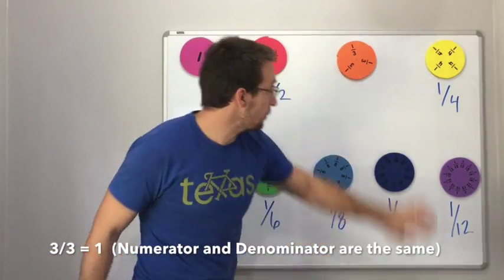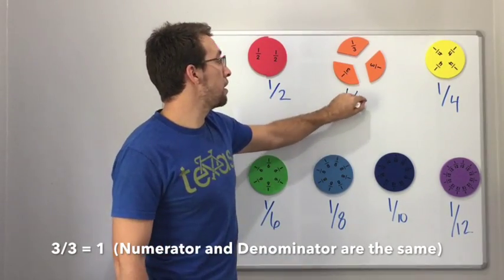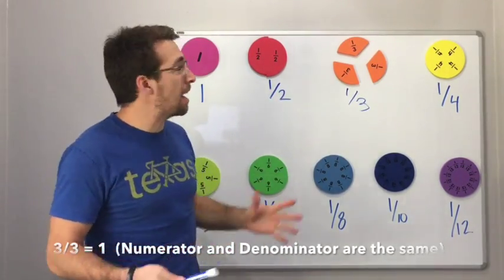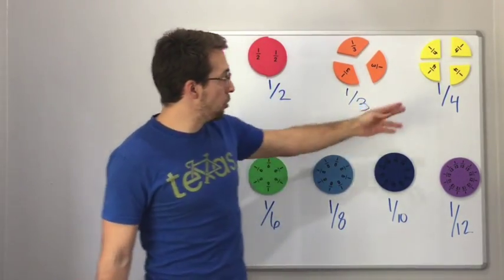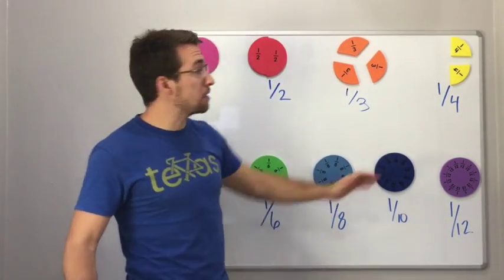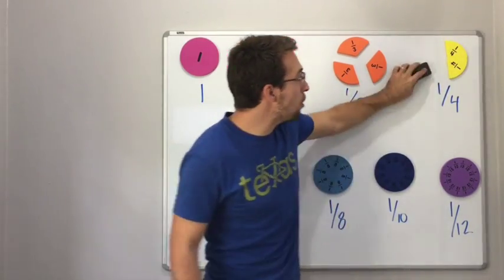So this is what thirds look like. One third. Same thing. We can break this down. What does it look like if you have a circle broken into four pieces? Well, there you go. Check this out. I took two pieces away, right? And what do I have?